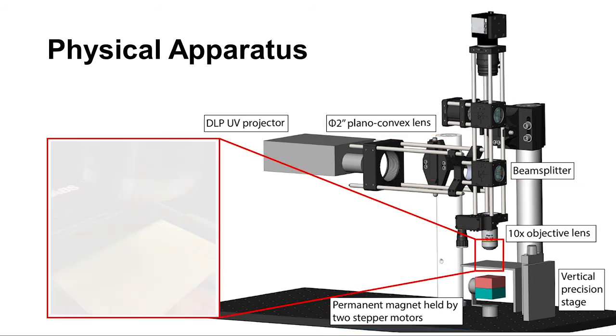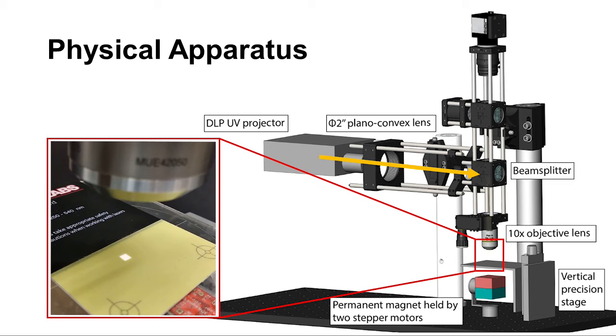The UV module uses a digital light processing UV projector as a light source. After traveling through several optical components, the light pattern generated is demagnified and printed on the vertical precision stage.